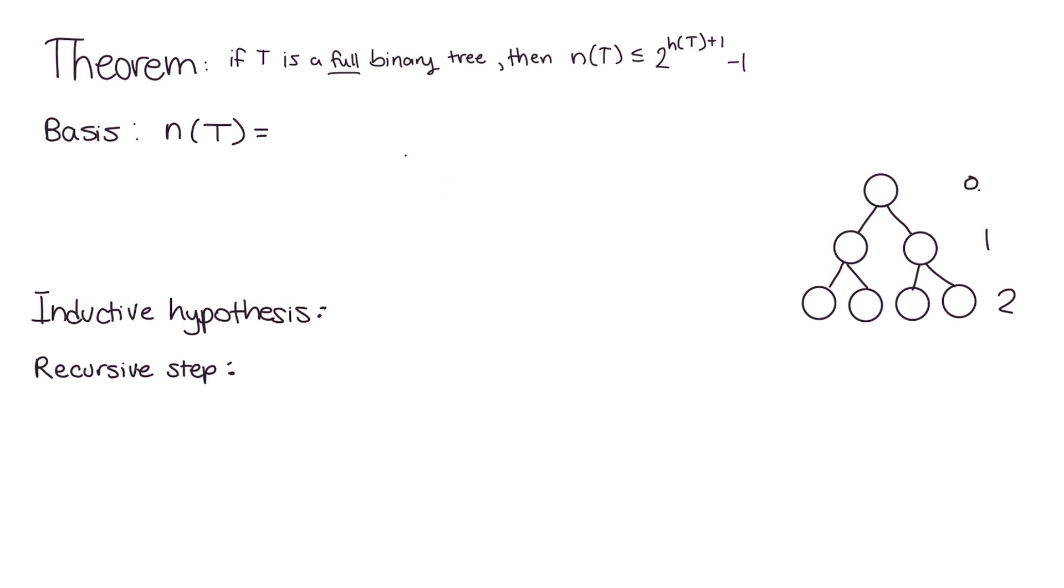But before we dive in, let's just think about why this is true. Let's apply this to our little example tree we have here. So n(T) has to be less than or equal to 2—the height is 2 of this tree—and then we simplify this. This equals seven. So the number of nodes in this tree has to be less than or equal to seven, and this example has exactly seven. But if I erase these, this is still a binary tree with a height of two, but there are only five nodes. So that's why we have to have the less than symbol as well.